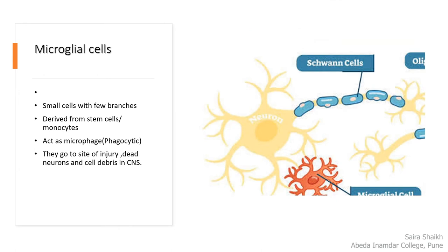Microglia cells are also present in the central nervous system. They are very small in size with a few branching structures. These cells derive from stem cells or monocyte cells. They are phagocytic in nature, like macrophages. They go to the site of injury, collect dead neurons and cell debris, digest them, and act like a scavenger.